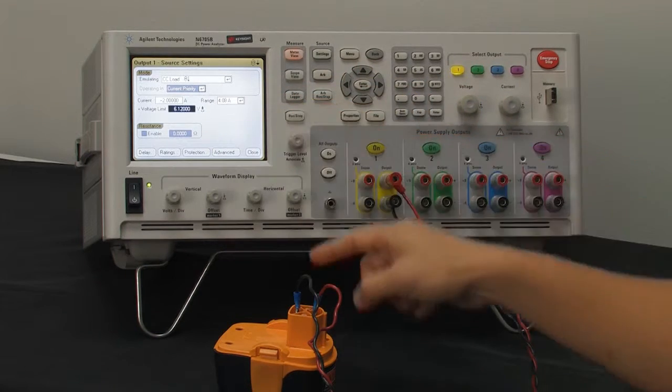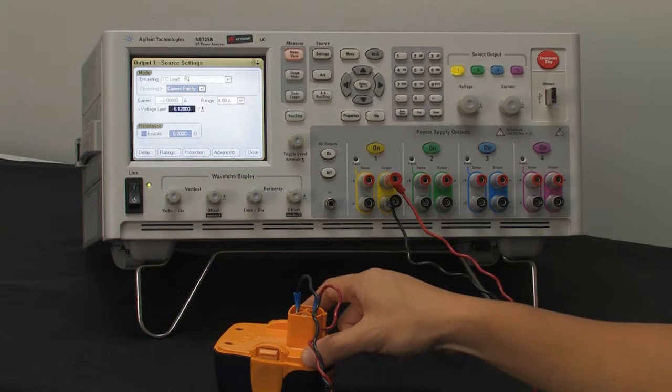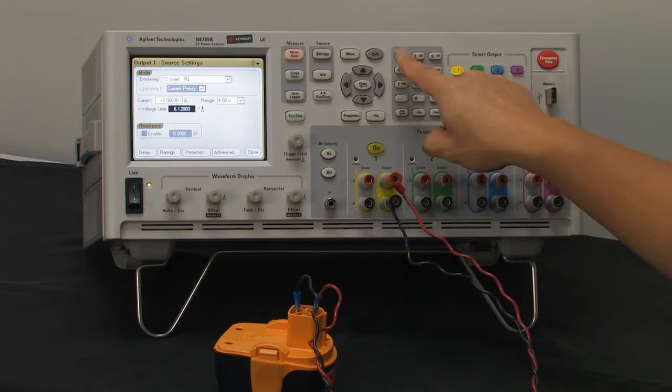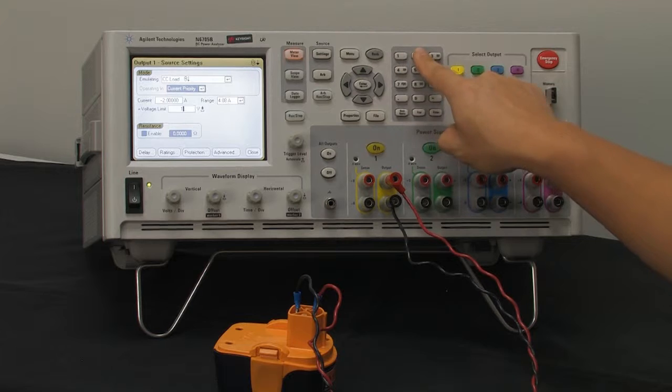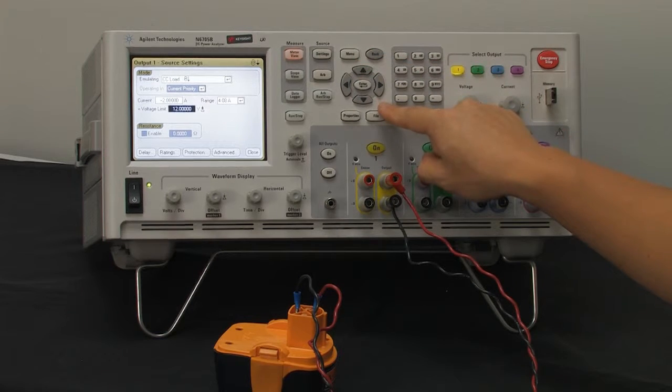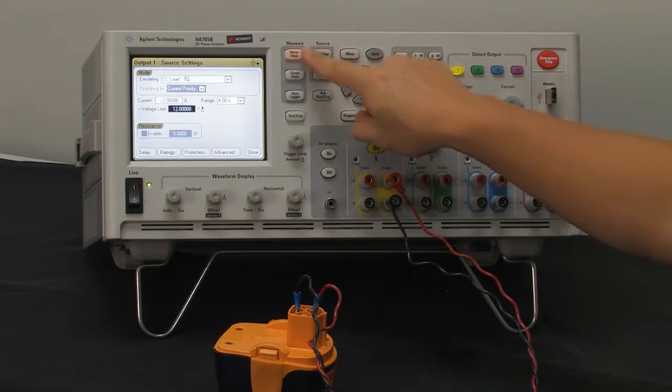Next we set the voltage. This is a 9.6 volt battery, and we're going to go ahead and choose a value well above that, so let's put in 12. At this point, we're pretty much all set to go.